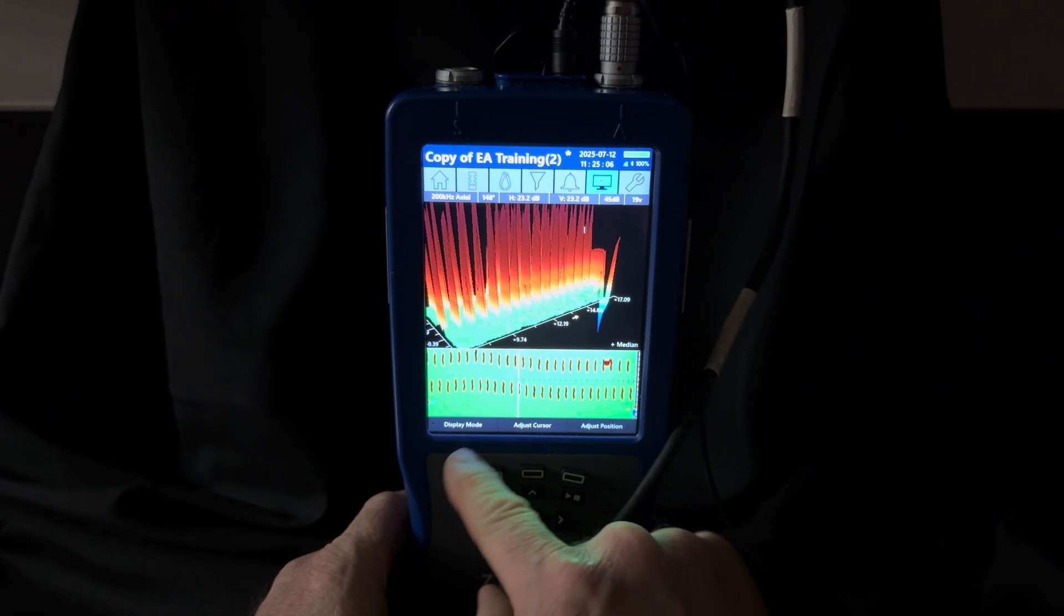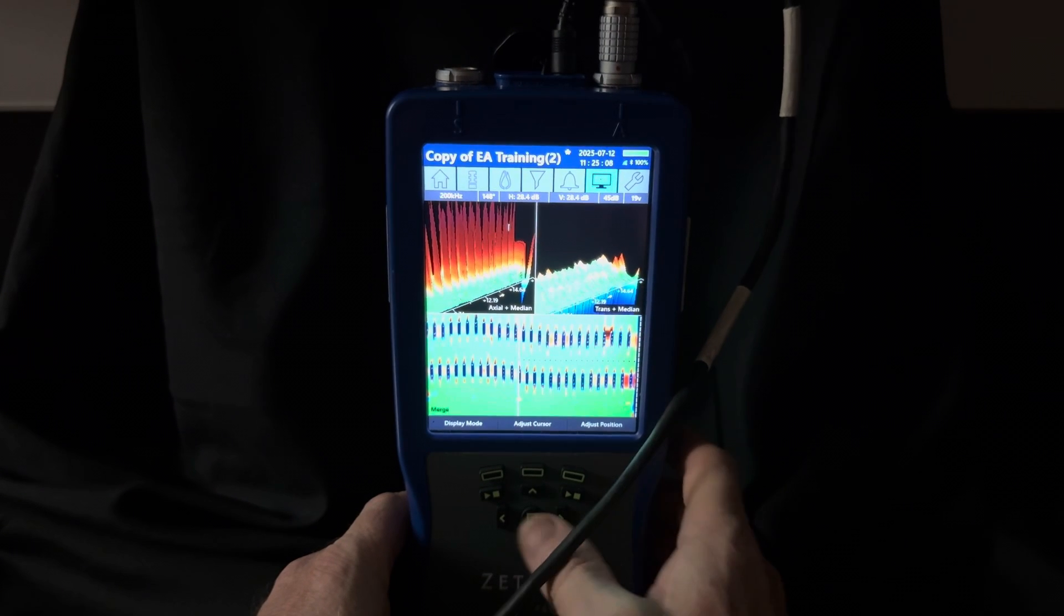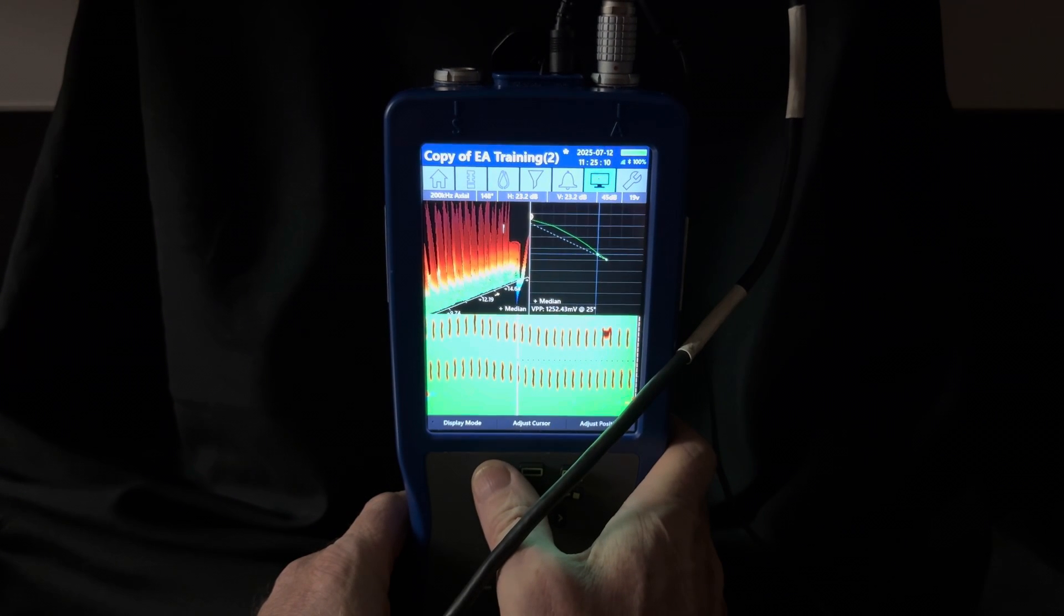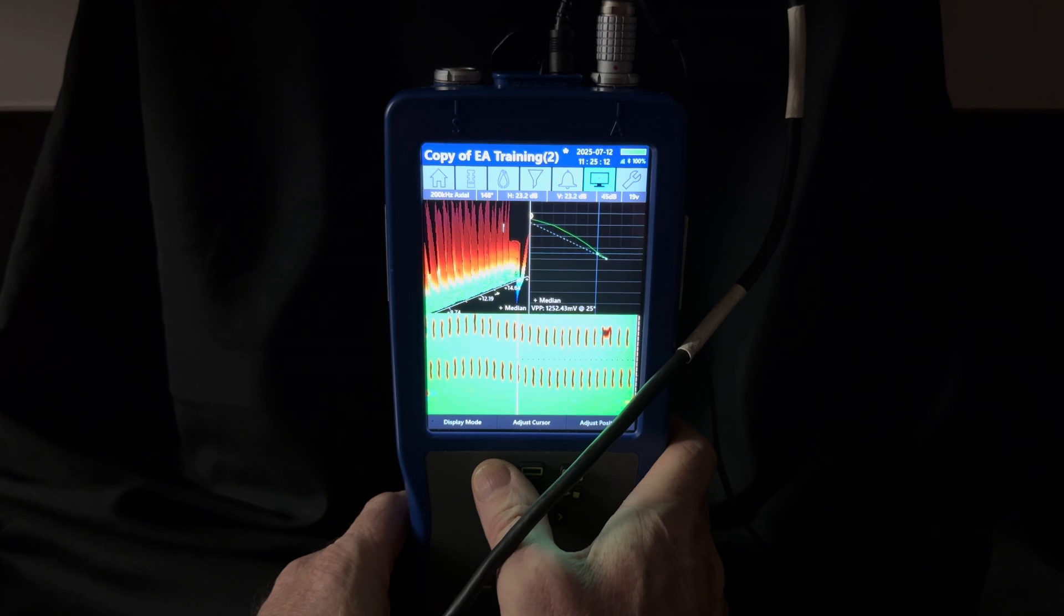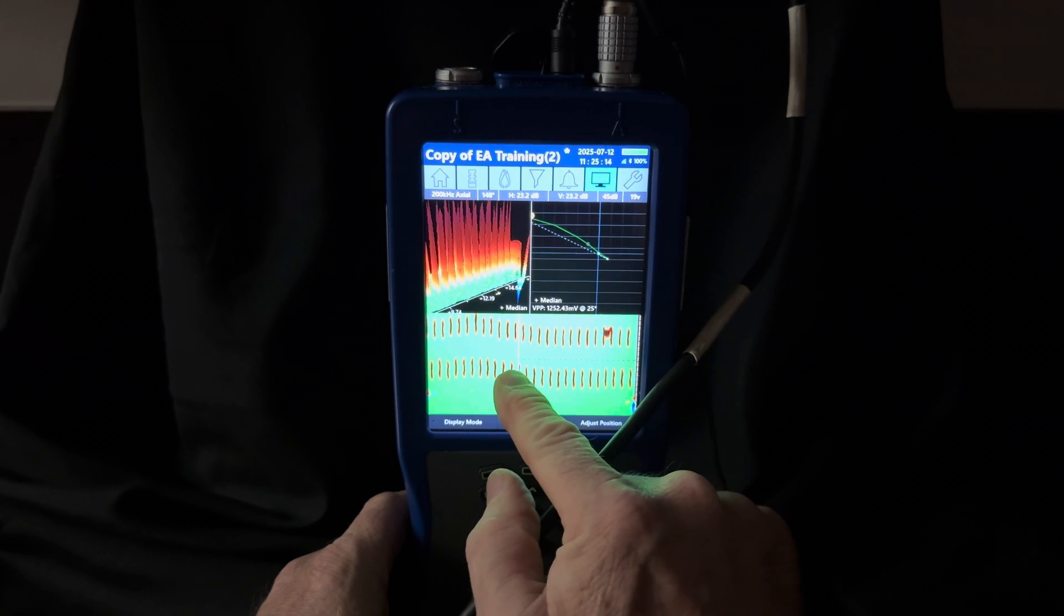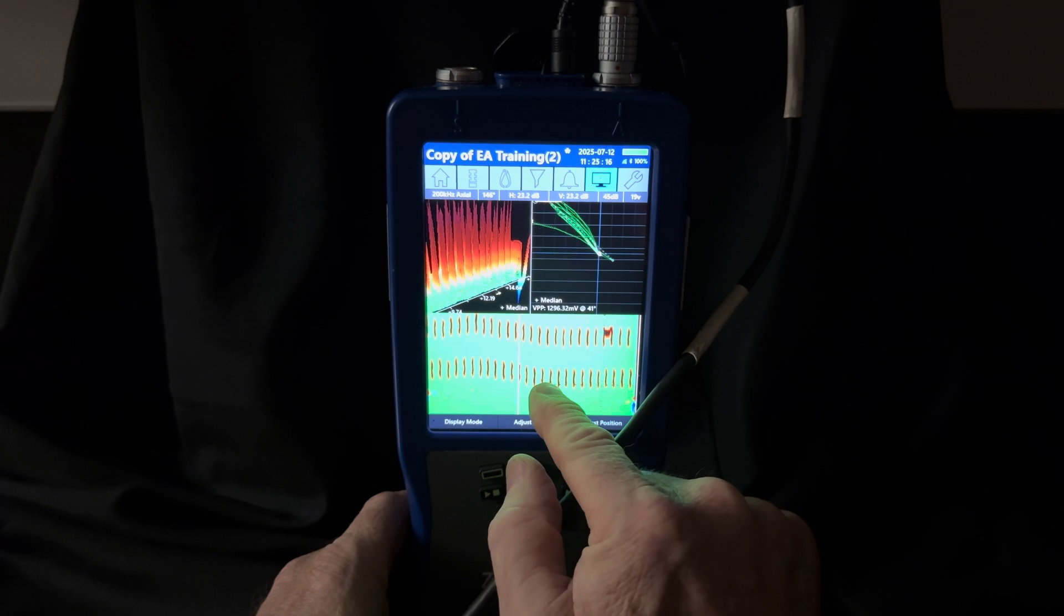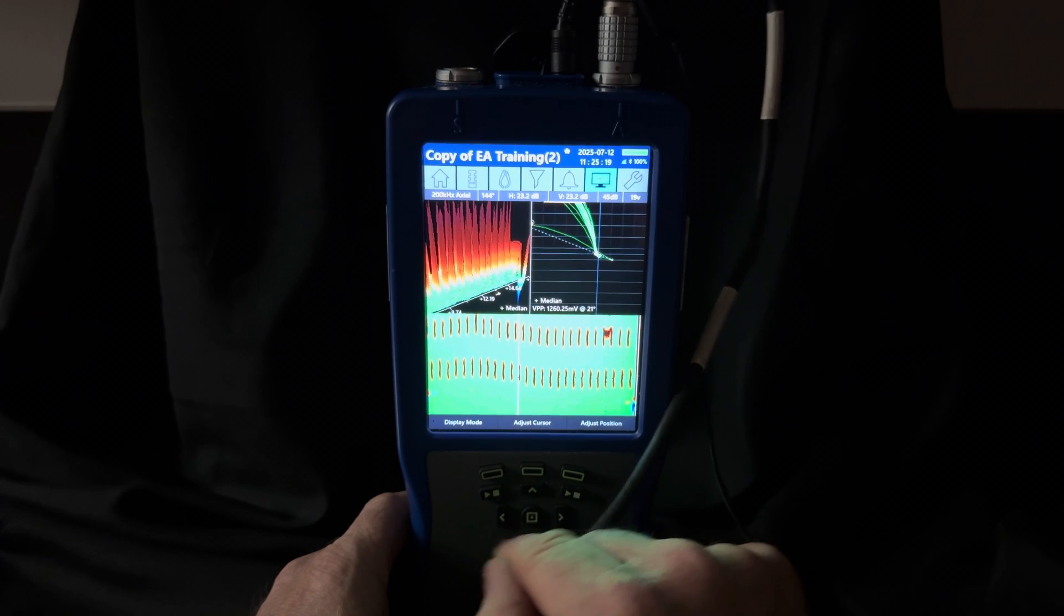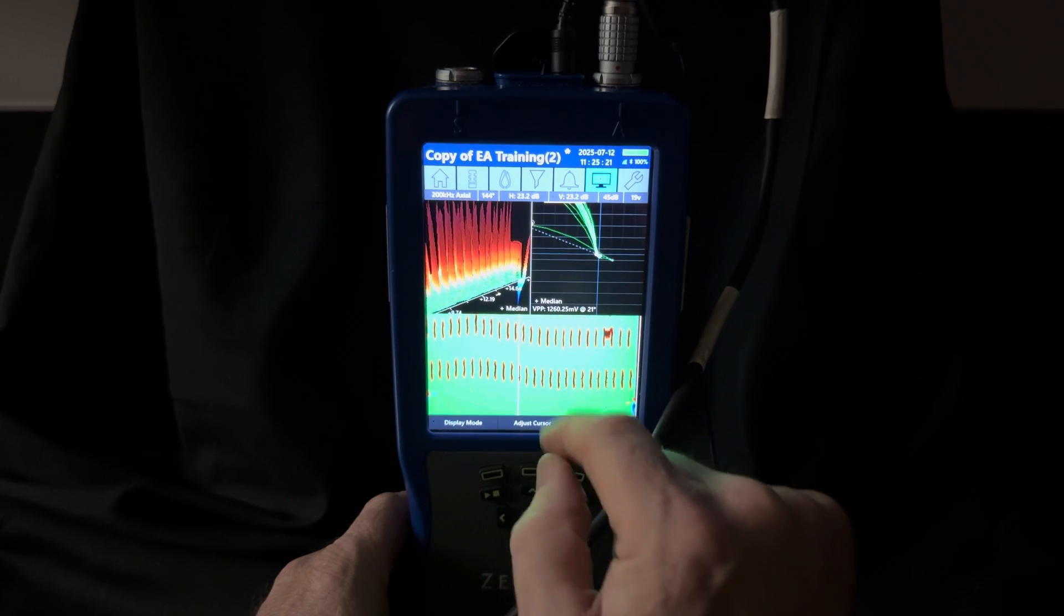Now there's multiple ways to look at the data. I'm going to go into the display mode here and just sort of toggle through some of the different displays we can choose. Here's the Lissajous view.